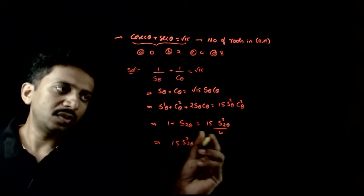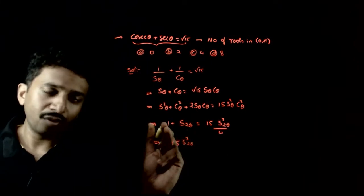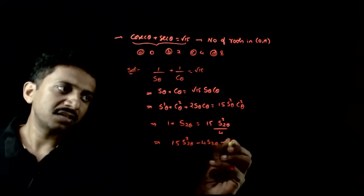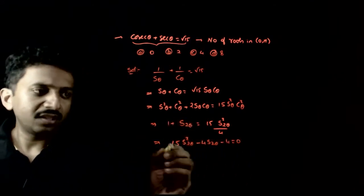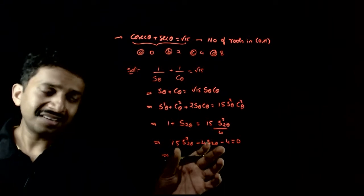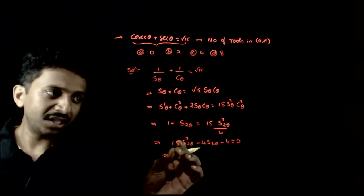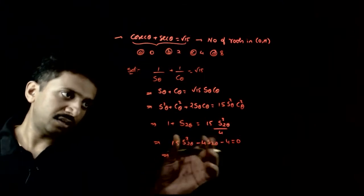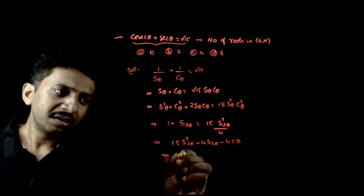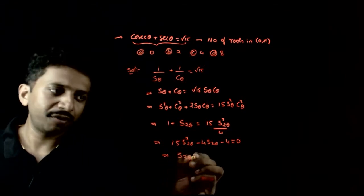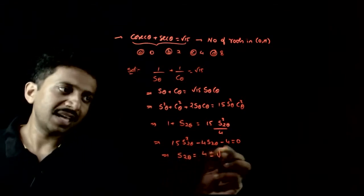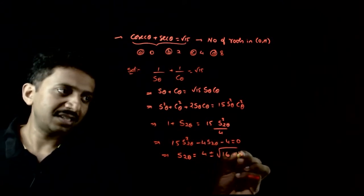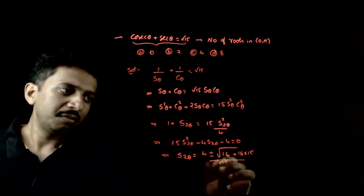after LCM cross multiplication, we get 15 sin squared 2 theta minus 4 sin 2 theta minus 4 equals 0. Direct factorization is not working, so I will use the quadratic formula. Sin 2 theta equals minus b plus or minus root of b squared minus 4ac, which gives plus 16 times 15 by 30.